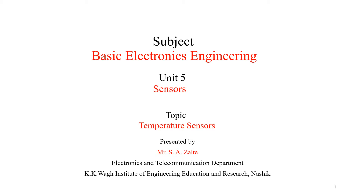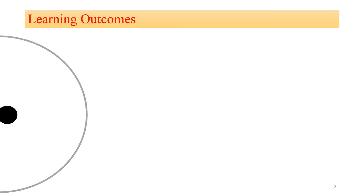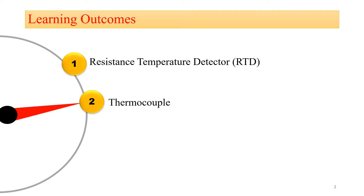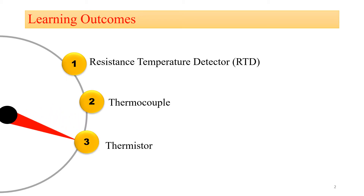Hello friends. In this lecture we will cover the next type of sensor, i.e. temperature sensors. The learning outcomes: after studying this topic, students will be able to understand the first type of temperature sensor i.e. resistance temperature detector, also called RTD, then the second temperature sensor i.e. thermocouple, and the third temperature sensor i.e. thermistor.